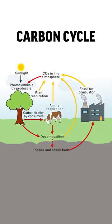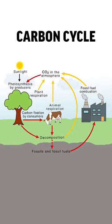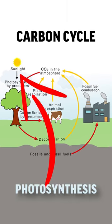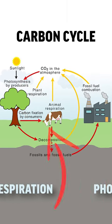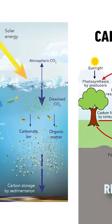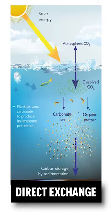There are processes that cycle carbon between reservoirs, such as photosynthesis and cellular respiration, which move carbon back and forth between the biosphere and the atmosphere, or direct exchange, where carbon moves in both directions between the ocean and the atmosphere.